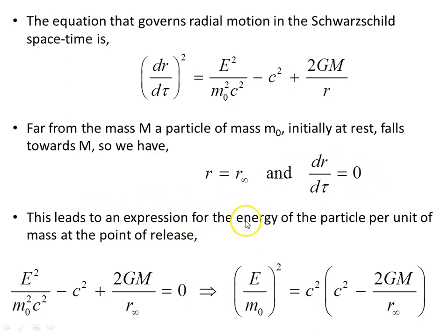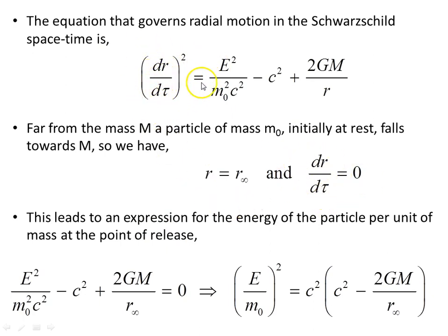This leads to an expression for the energy of the particle per unit of mass at the point of release. We set dr/dτ equal to 0, which sets that term to zero, and solve for the energy per unit rest mass squared — giving us this expression.